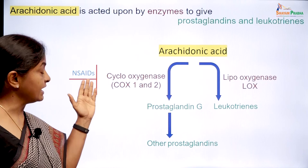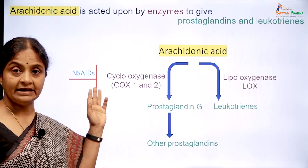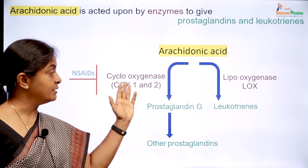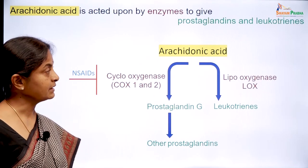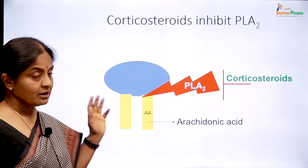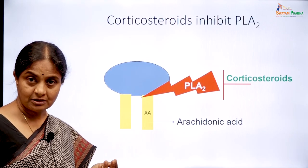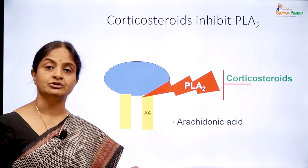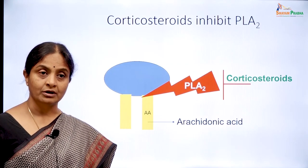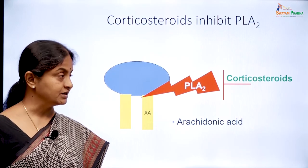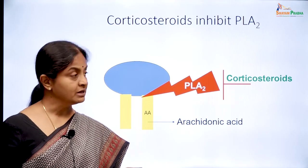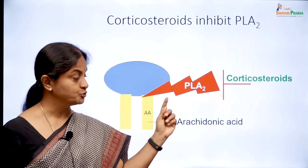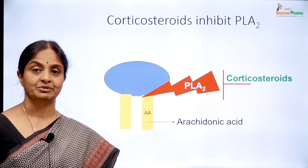A set of compounds called NSAIDs, or non-steroidal anti-inflammatory drugs, help to reduce inflammation by inhibiting the cyclooxygenase enzyme. Corticosteroids — either endogenous or those given therapeutically — are also anti-inflammatory and help to reduce inflammation by inhibiting the phospholipase A2 enzyme, which would otherwise release arachidonic acid from the membrane phospholipids.